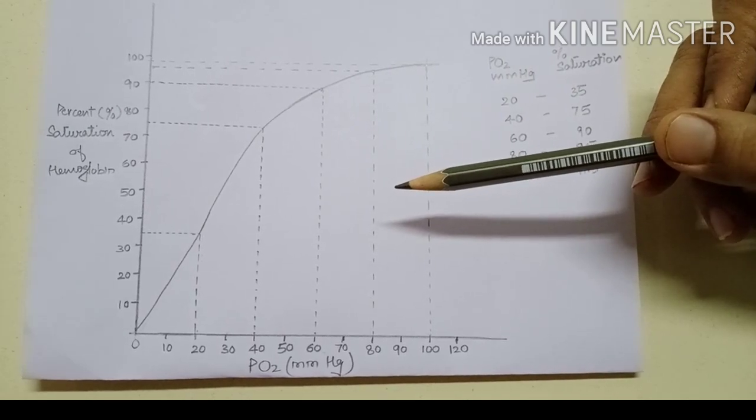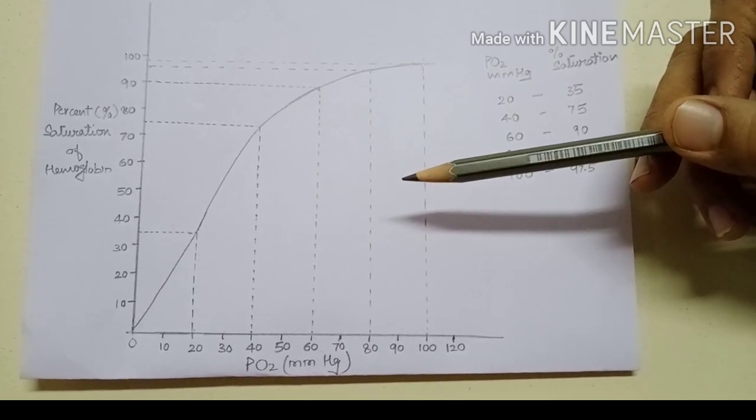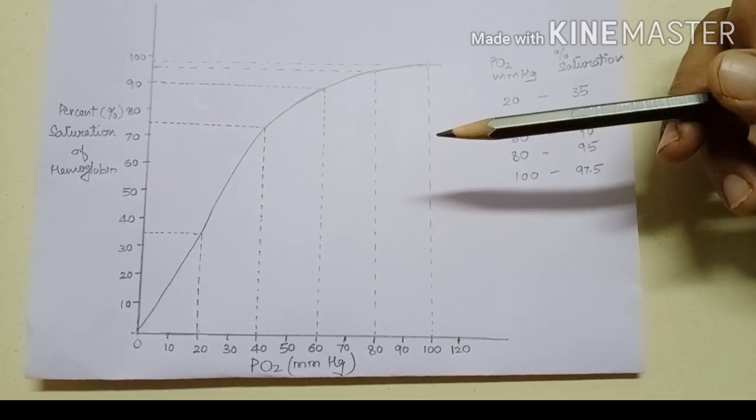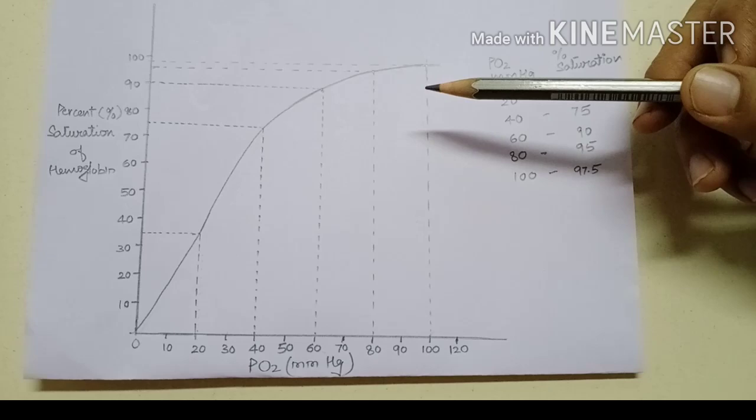This is important for mountain climbing to moderate altitude as well as in pulmonary diseases. Here, a person can tolerate changes in atmospheric pressure without compromising the oxygen carrying capacity of hemoglobin.